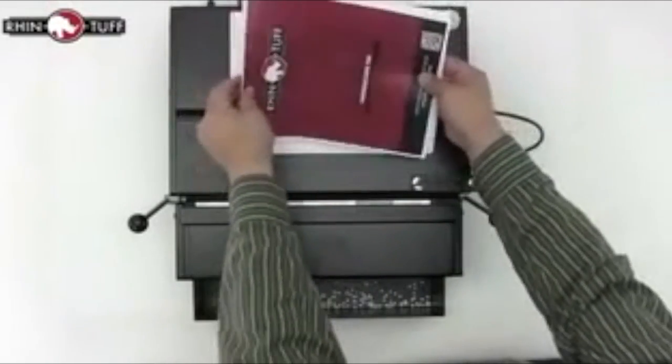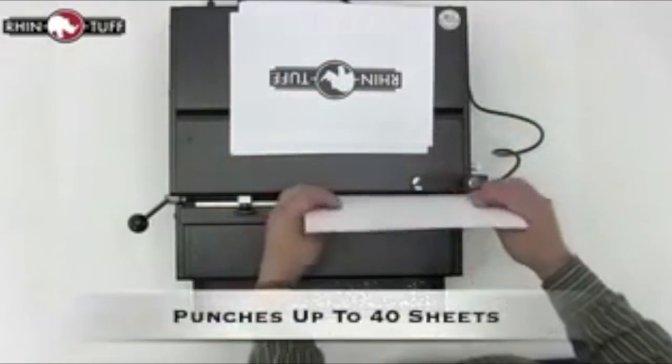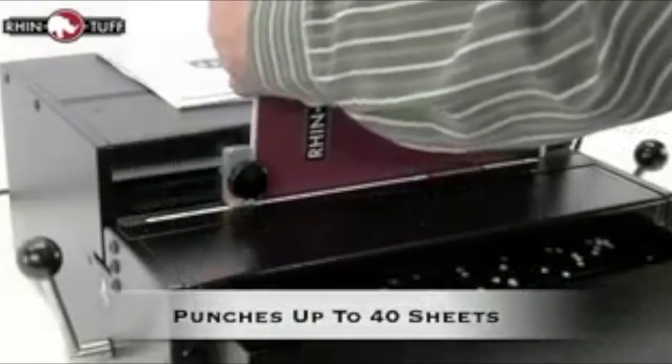When it comes to the actual punching, the machine is fast and solid. It can punch up to 40 sheets or 80 pages of 20-pound paper.